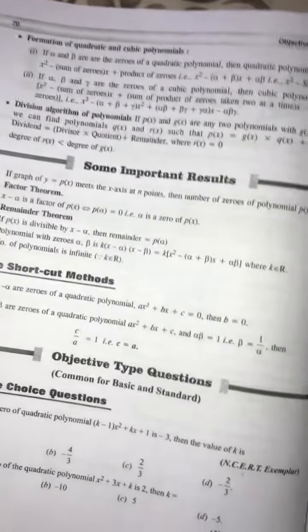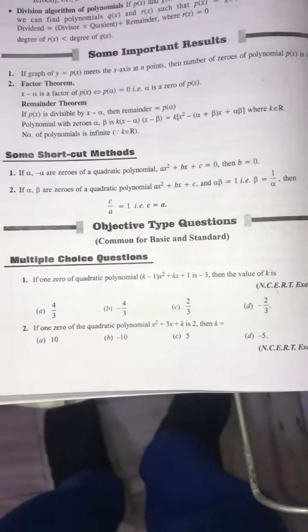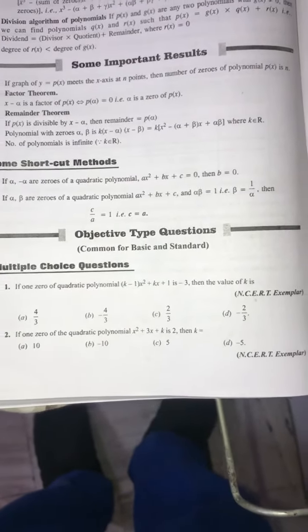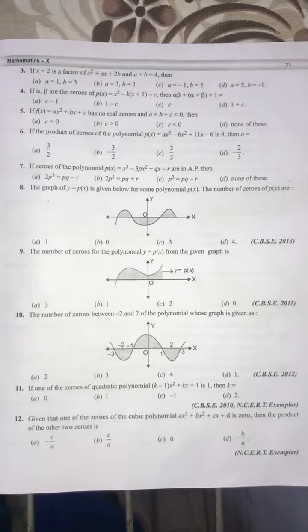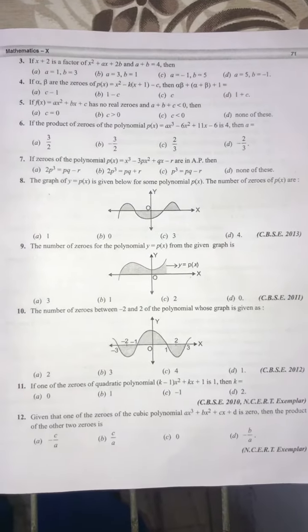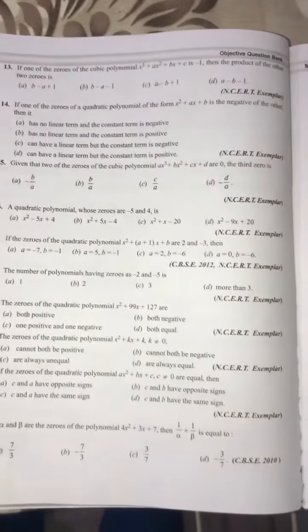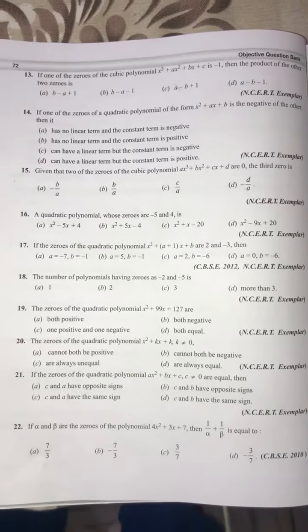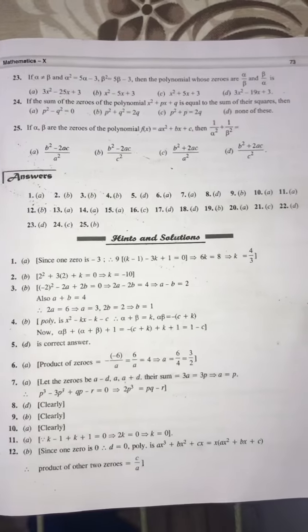So as you can see, these are the multiple choice questions with four given options. Aapko isme se ek option ko tick karna hai. To aise hi aapko question aapke paper mein jo pehle 20 number mein 10 questions aapko milenge jisme se aapko ek option ko tick karna hoga.